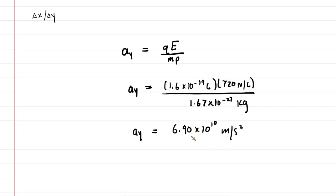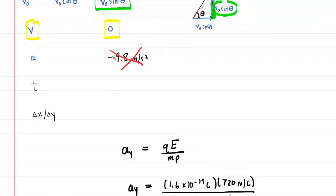Notice how much larger 6.9 × 10¹⁰ is compared to 9.8 — that further confirms why we can ignore gravity. This acceleration points downward because the electric field points downward and the proton is a positive charge, which is pushed in the same direction as the field. So the acceleration is negative: −6.9 × 10¹⁰ m/s², and we fill this into our table.